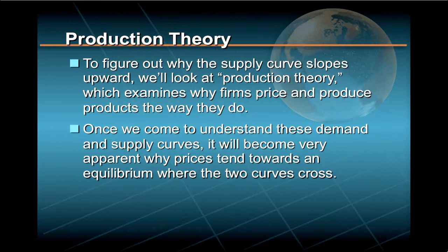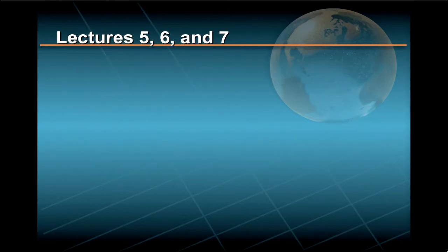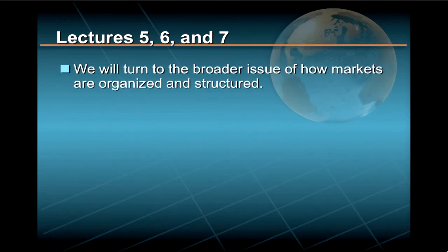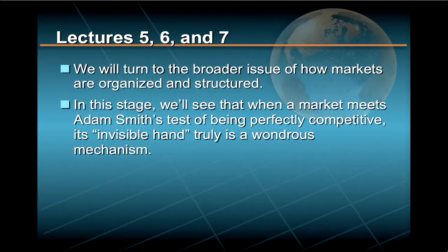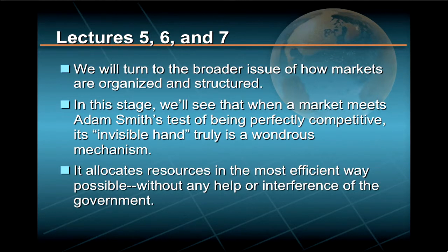Once we come to understand these demand and supply curves, it will become very apparent why prices tend towards an equilibrium where the two curves cross. In lectures 5, 6, and 7, we will turn to the broader issue of how markets are organized and structured. We'll see that when a market meets Adam Smith's test of being perfectly competitive, its invisible hand truly is a wondrous mechanism — it allocates resources in the most efficient way possible, without any help or interference of the government.